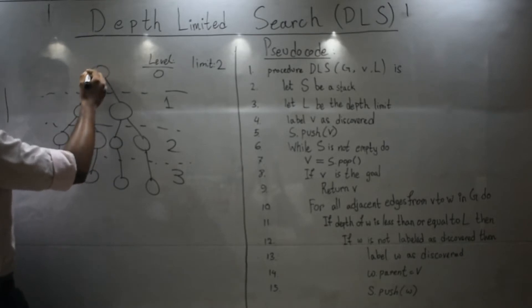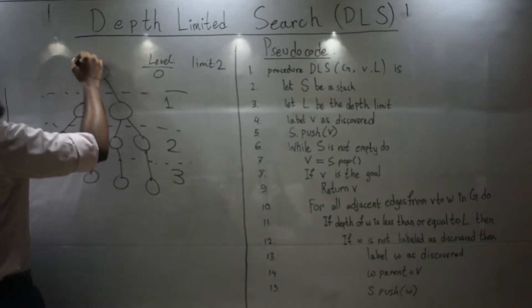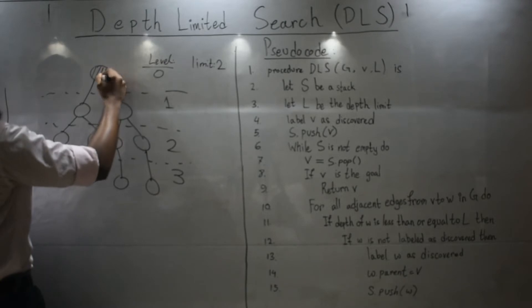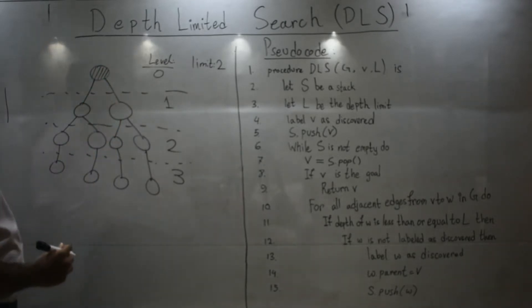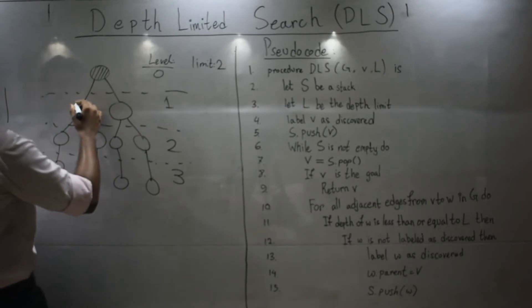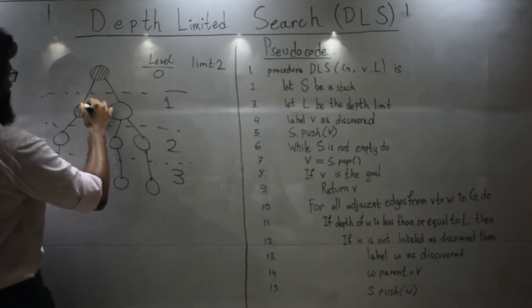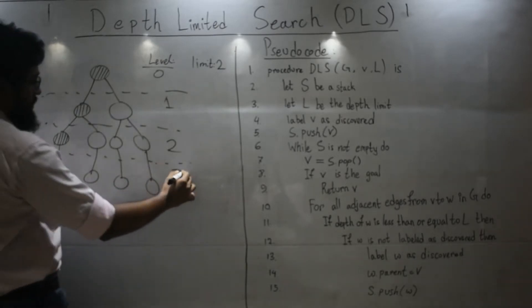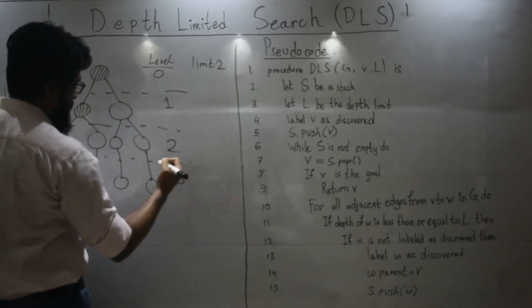So, depth first search, we usually go along the depth. So let's start from the root node. Let's discover the root node. And then we will traverse here and discover this. And after that, we will cover this one. You will see that we will not discover this node because this is more than my limit. It's three.